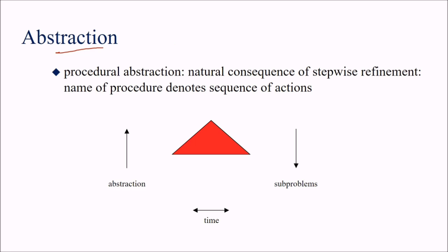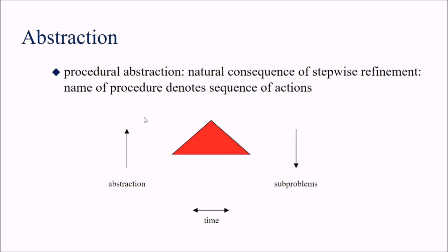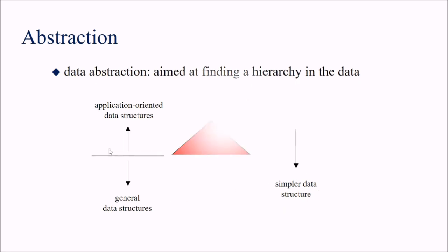Starting with abstraction: procedural abstraction is the natural consequence of stepwise refinement — the name of a procedure denotes a sequence of actions. Abstraction levels go from the main problem divided into sub-problems. Data abstraction is aimed at finding a hierarchy in data — from simple data structures to application-oriented data structures.